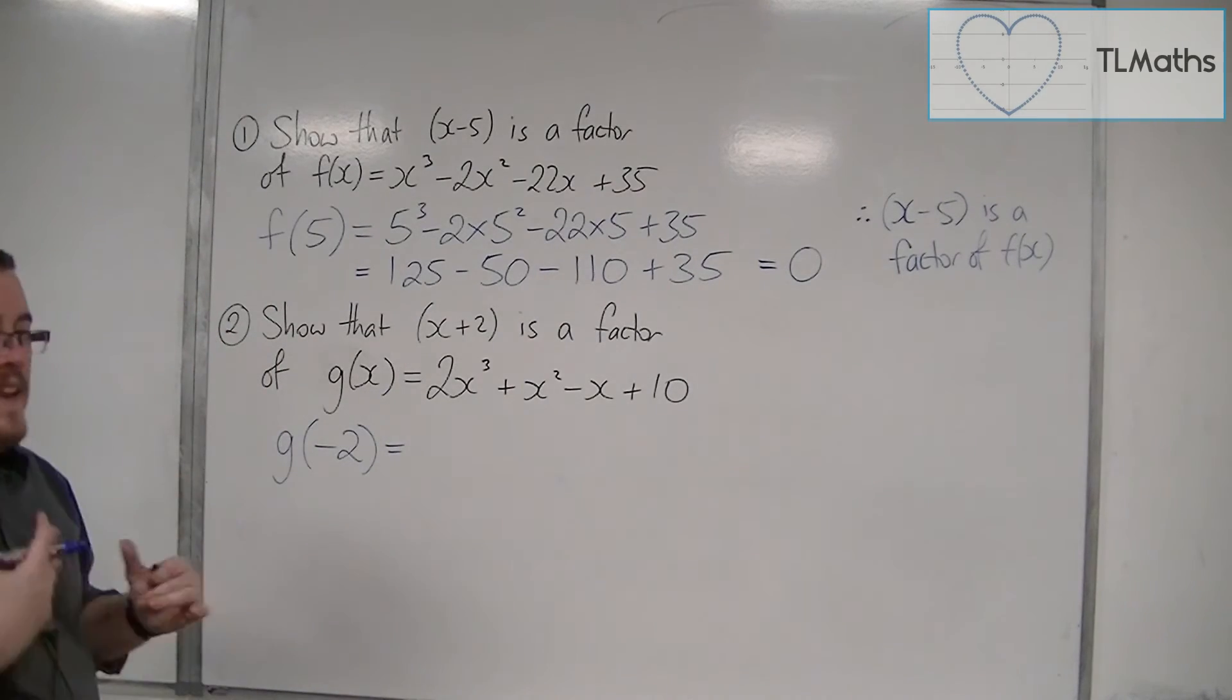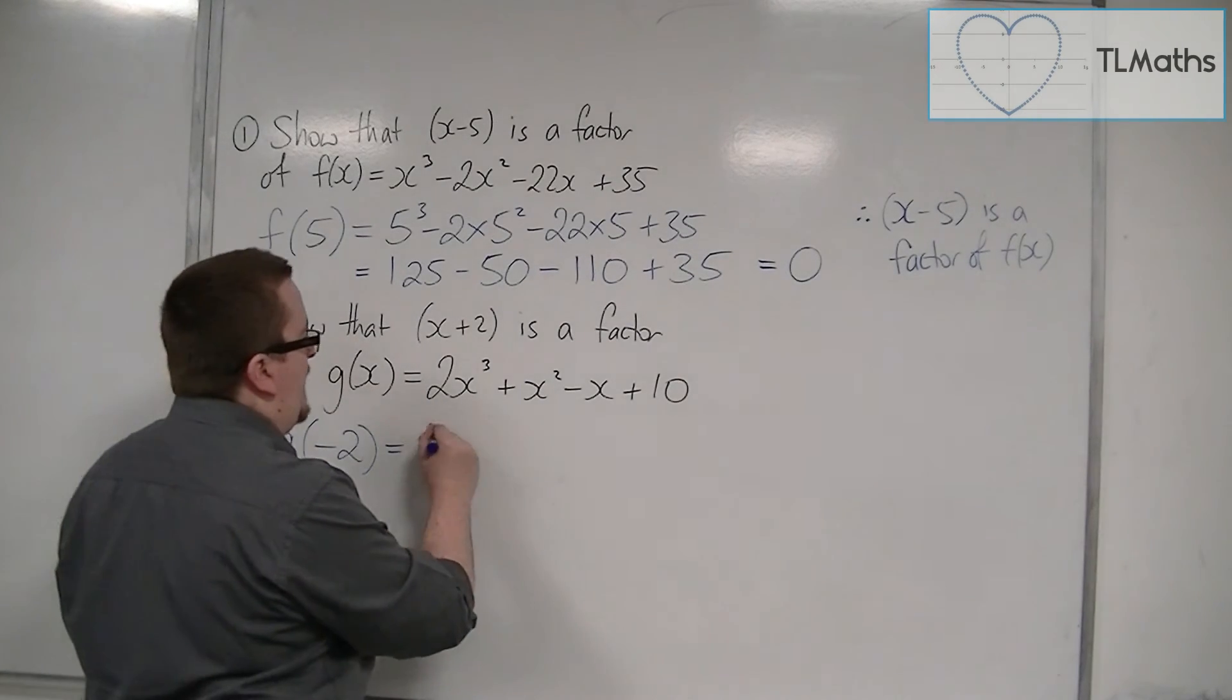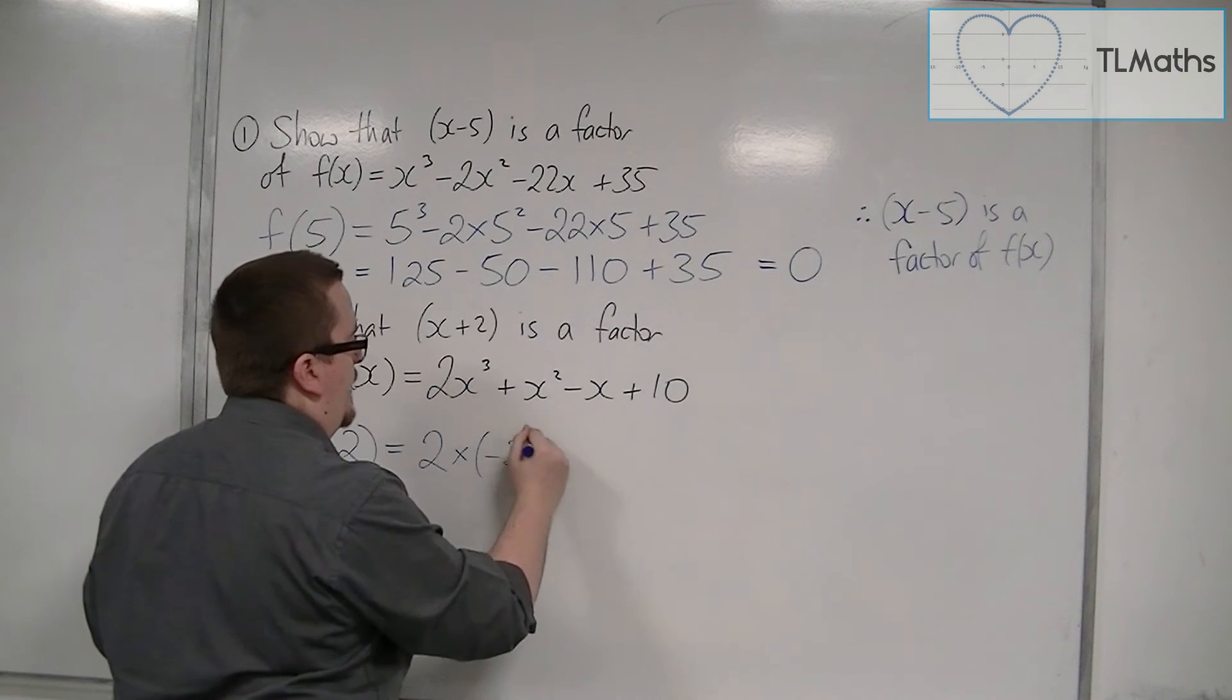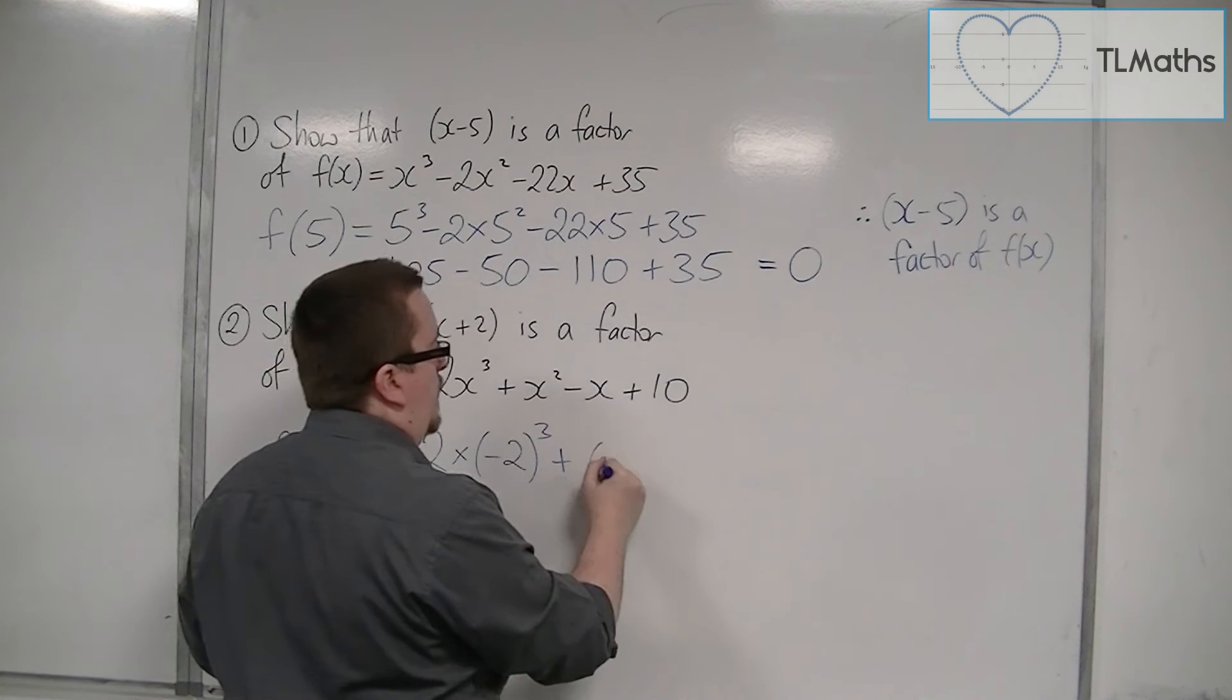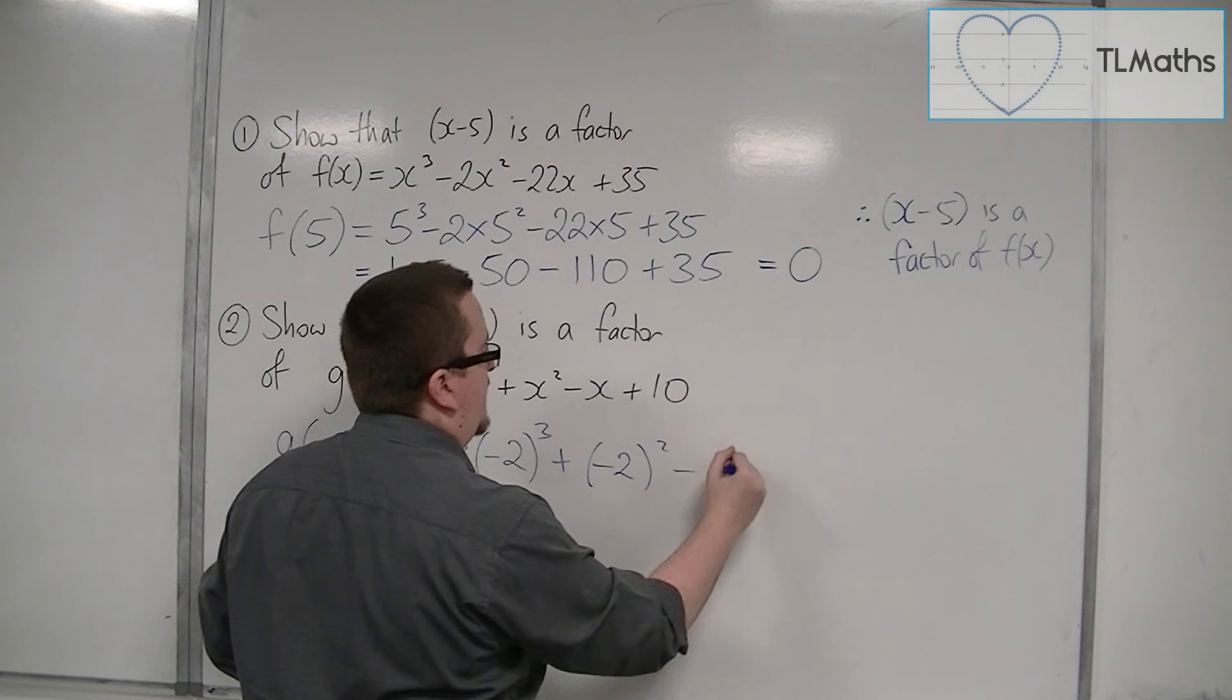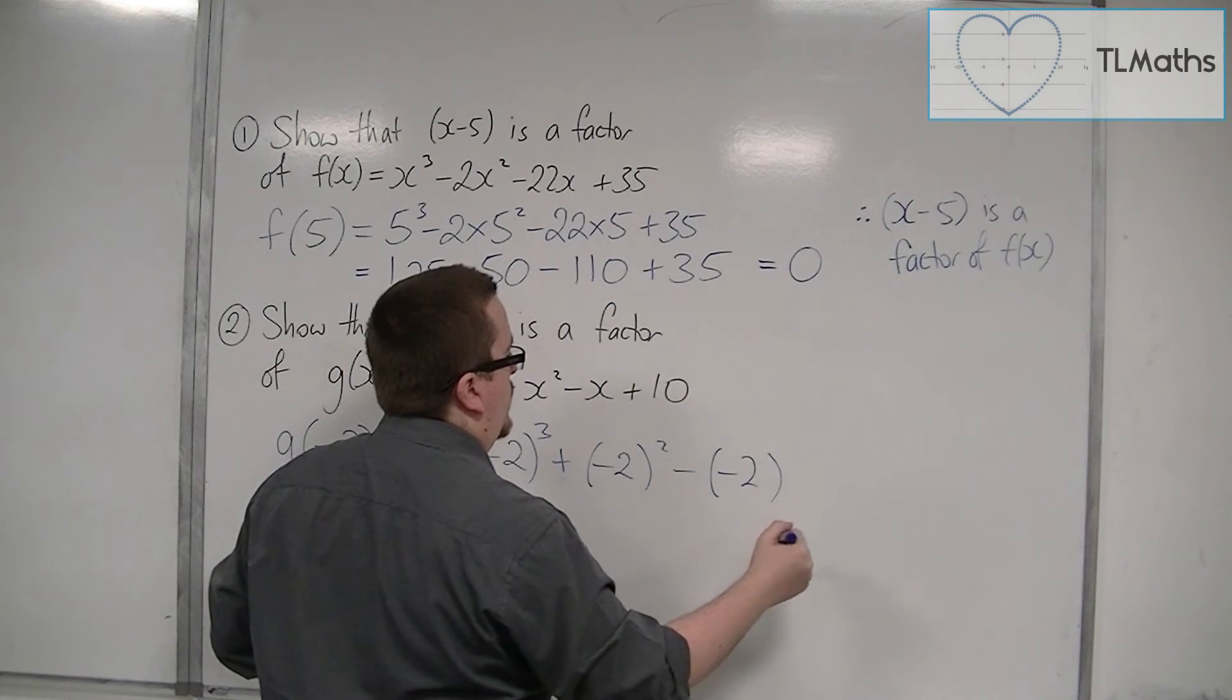So we need to substitute minus 2 into this. Because it's a negative number, it's a lot easier if you use brackets. So we've got 2 lots of (-2) cubed, plus (-2) squared, take away (-2), plus 10.